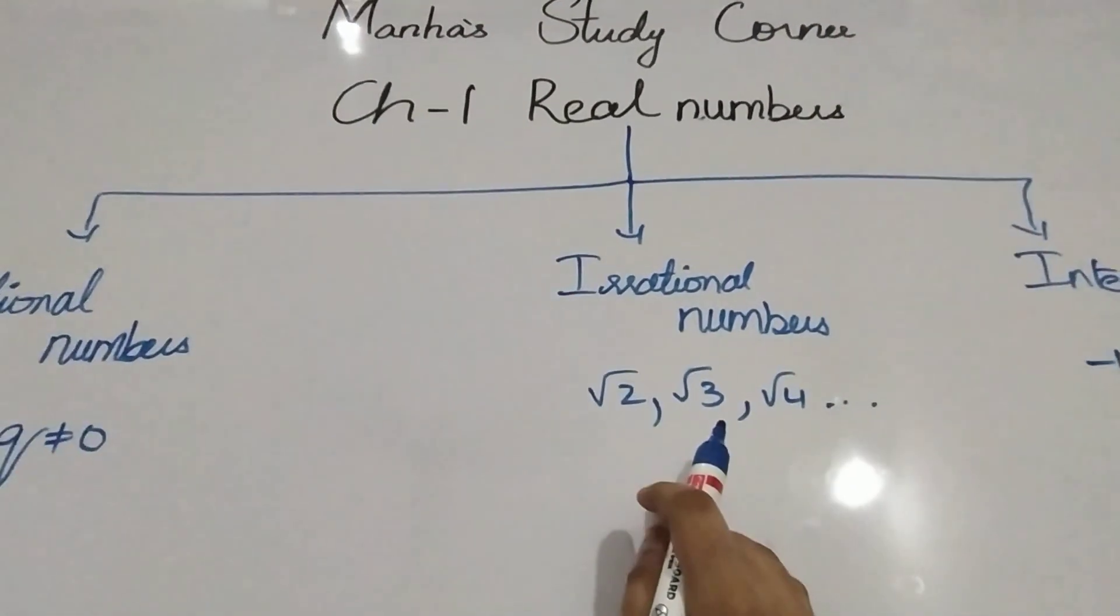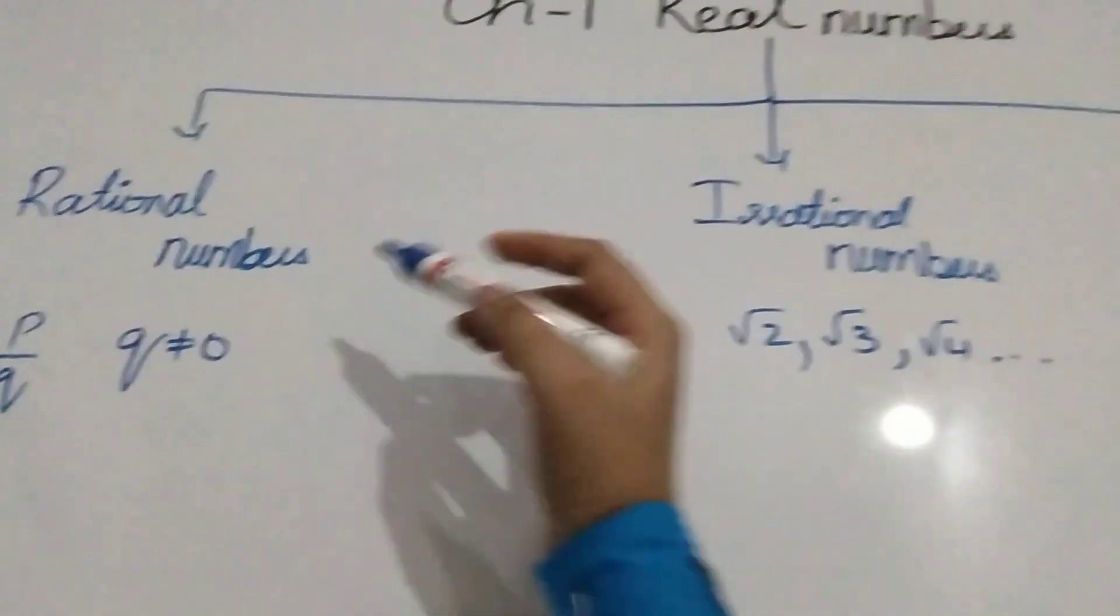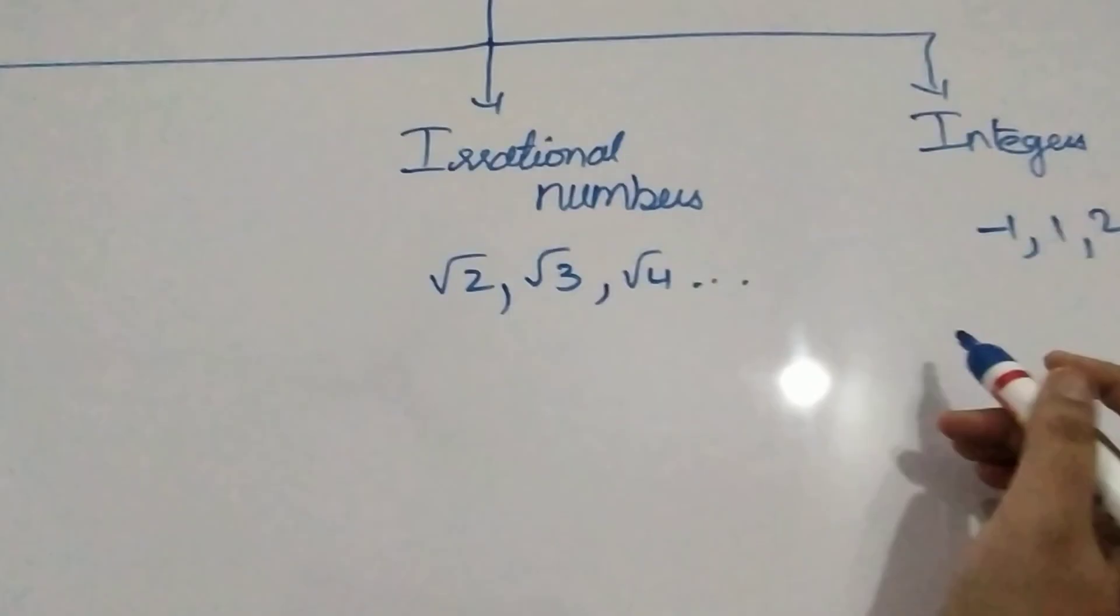So what are real numbers? Real numbers are the combination of rational numbers, irrational numbers and integers.